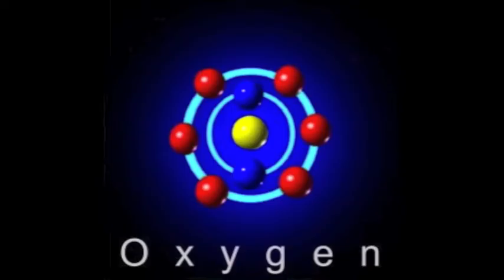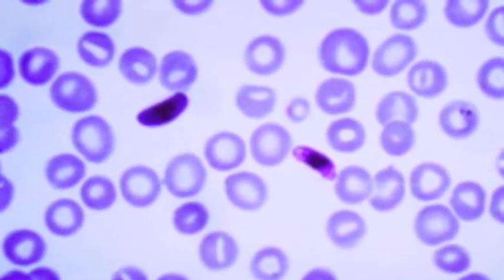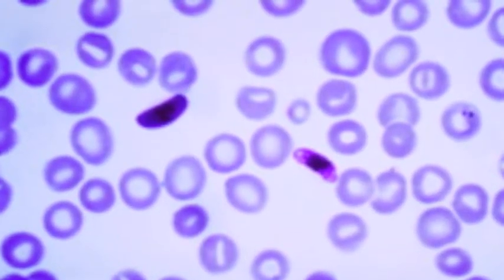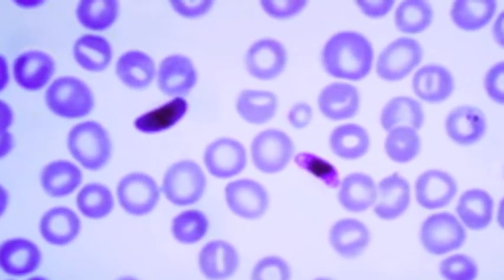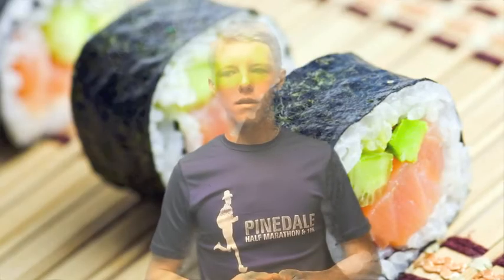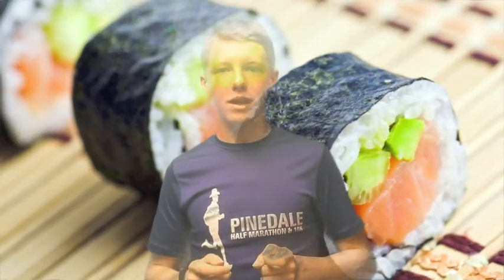There are both negative and positive sides to the relationship between protists and humans. On one hand, protists provide most of the oxygen we breathe, help decompose matter, and serve as a major means of energy. On the other hand, protists give us some of the worst diseases in the world — for example, malaria is caused by the protist Plasmodium, and protists also cause African sleeping sickness. On the positive side, the seaweed surrounding a sushi roll is just algae, a protist.